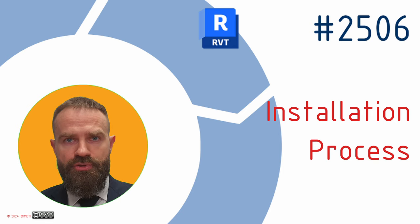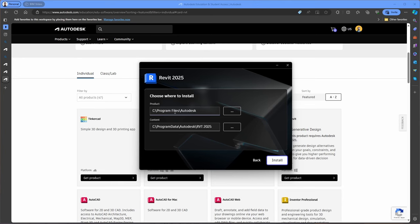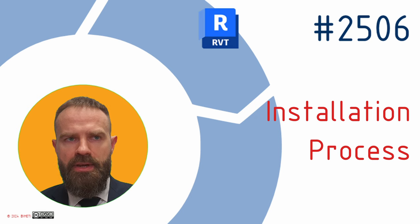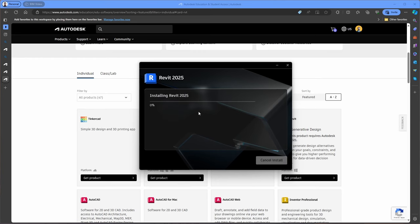Now you will choose the type of installation. You can select Install for a standard installation with default settings, which is recommended for most users. If you need to customize the installation, such as changing the installation location or selecting specific components of Revit to install, choose Custom installation. For this tutorial, I will go through the standard installation.